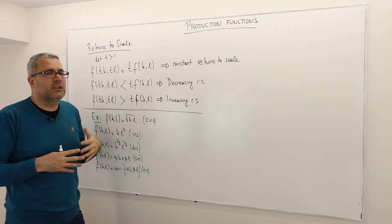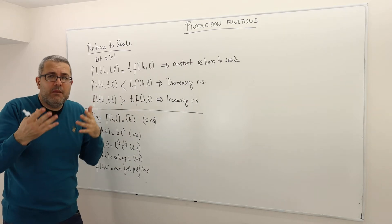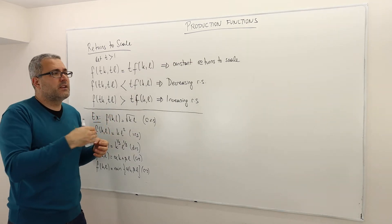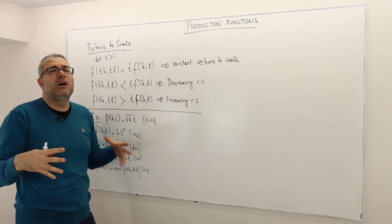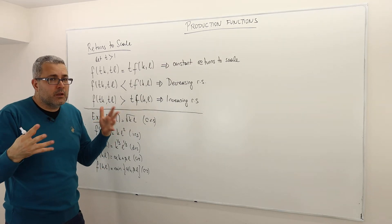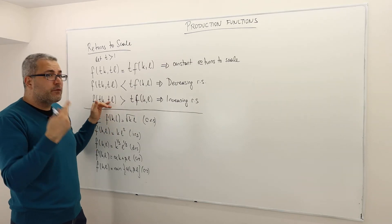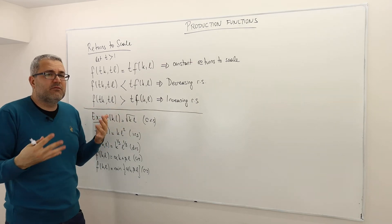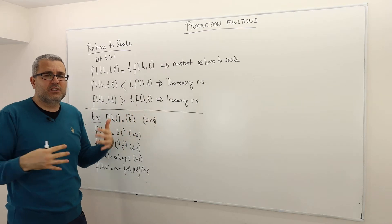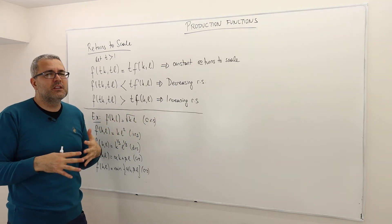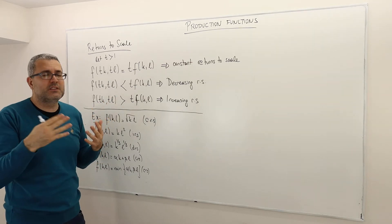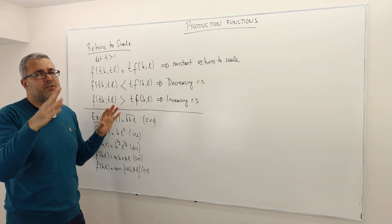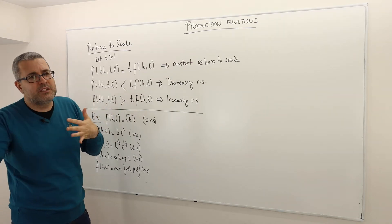Increasing returns to scale functions are not really realistic. In real life, as a smaller firm doubles its inputs, output may double or even grow bigger than double. But as you keep multiplying inputs — say, 10 times — becoming a 10-times-larger producer doesn't necessarily mean producing 10 or 15 times more. So in reality, production functions often show increasing returns to scale up to some level, then become constant or decreasing returns to scale.